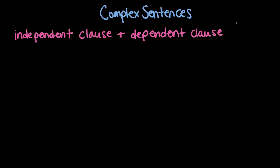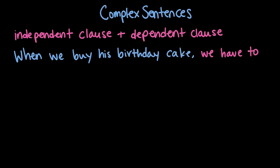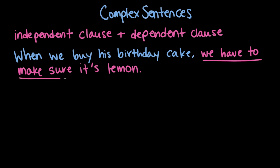So Rosie, what's an example of a complex sentence? When we buy his birthday cake, we have to make sure it's lemon. So the sentence 'when we buy his birthday cake, we have to make sure it's lemon' is made up of two clauses, and I've written them in different colors here. The second one — the pink one — can stand on its own as a sentence. We could just say 'we have to make sure it's lemon.' It functions as an independent clause, its own sentence. We have some information that might be missing because we don't necessarily know what 'it' is, but we do have all the components of an independent clause here.